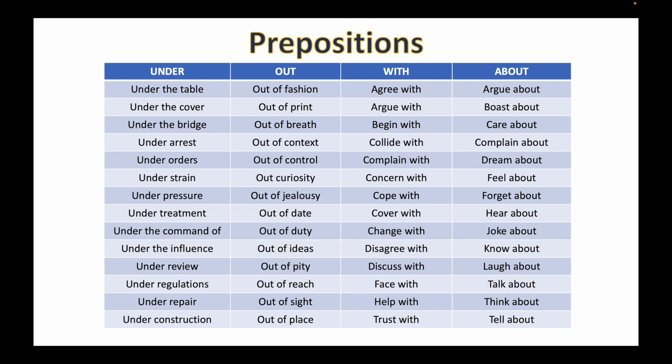Next preposition is 'about.' Argue about — jab aap kisi cheez ke baare mein baat karte hain. I do not want to argue with you about this matter. Boast about — she loves to boast about her talents. Care about — motherhood is all about caring about the child. Complain about — no one is going to complain about this matter.